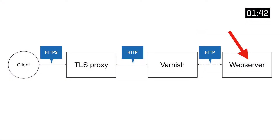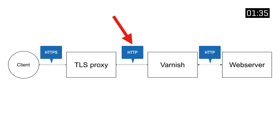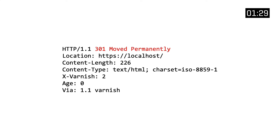The web server has no prior knowledge of the original client connection being done over HTTPS. Because the TLS proxy terminates the TLS connection and uses plain HTTP in the back, the web server only sees Varnish — it only sees that plain HTTP request and issues the 301 redirect accordingly.